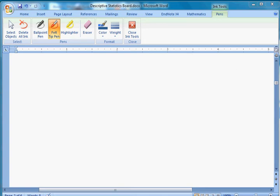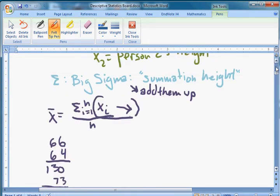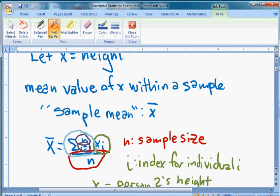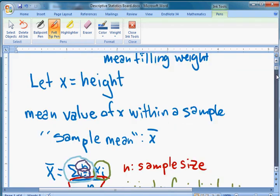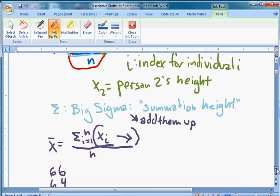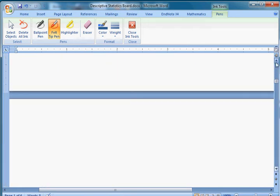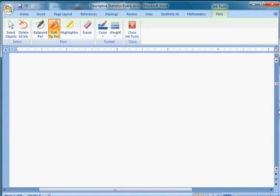All right, welcome back. We just looked at mean, sample mean, and population mean briefly. We're looking at descriptive statistics right now, reviewing business statistics. We talked about size, talked about mean, and talked briefly about population mean and median and mode.